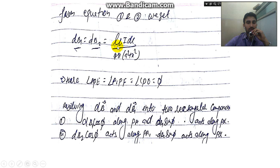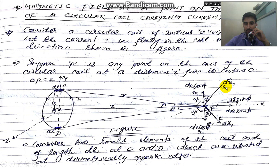From equations 1 and 2, DB₁ equals DB₂ = μ₀I·dl / (4π(a² + X²)). Now we break DB₁ into two rectangular components: DB₁·cos φ along PA, and DB₁·sin φ along PX. Similarly, DB₂ breaks into DB₂·cos φ along PA and DB₂·sin φ along PX. Since DB₁ and DB₂ are equal, the cos φ components cancel out, and only the sin φ components survive.